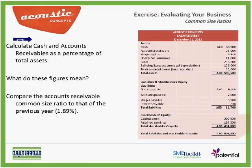Here we have a balance sheet for Acoustic Concepts. What we have to do is calculate the cash and accounts receivable as a percentage of total assets. Let's start first with the cash as a percentage of total assets. In the balance sheet, the base of the common size ratios is the total assets.